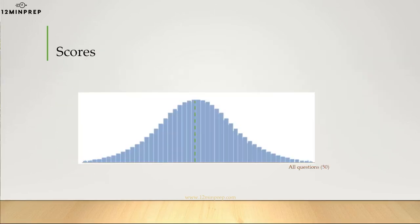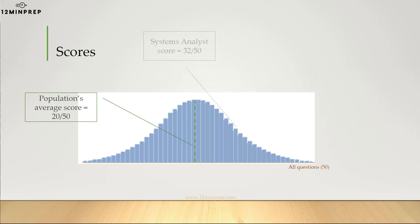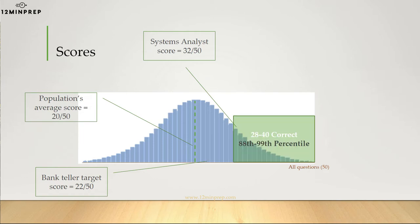According to the Wonderlic company, the average score is 20 out of 50 correct answers. However, average scores for specific positions may vary. For example, a target score for a systems analyst is 32 out of 50, while a bank teller is 22 out of 50. Competitive positions may require scores of 30 or above.